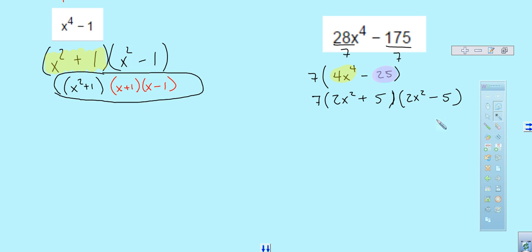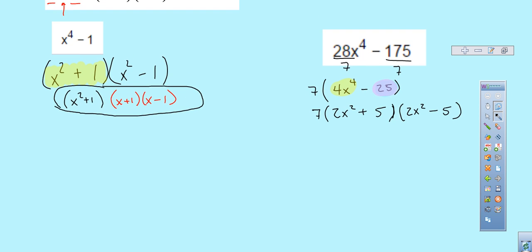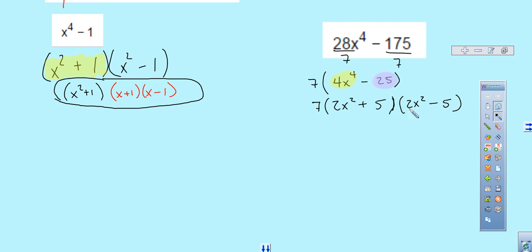So, now I look at that guy and I'm like, okay, can anything else break down? The 7, nope. The 2x squared plus 5, nope. Because that has a plus sign in the middle. This guy has a minus sign in the middle. So, I could think about difference of the squares. Of two perfect squares. But the problem is that 2 is not a perfect square. 5 is not a perfect square. So, I'm done.